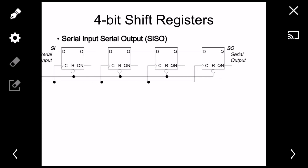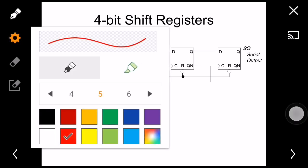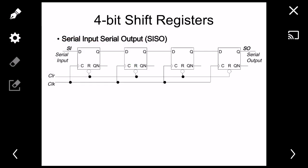Now let's talk about the 4-bit shift register. The main idea is to shift data from the input to the next D flip-flop input, and so on. This is called serial input serial output (SISO). I connected the output of each flip-flop to the input of the next one. All clocks are shorted and all clear pins are shorted — putting clear to zero sets all outputs to zero.